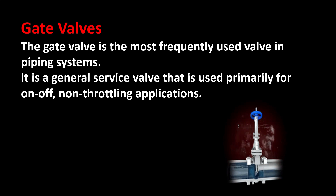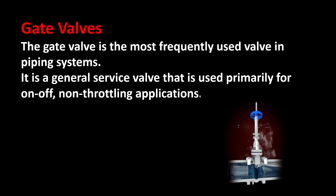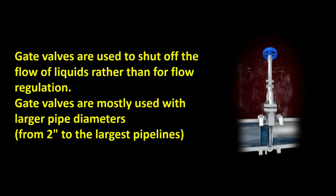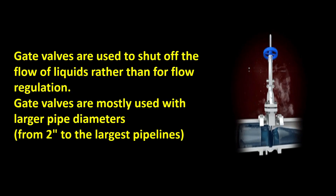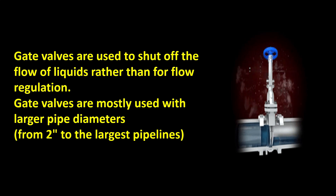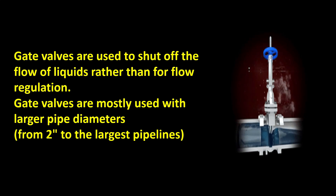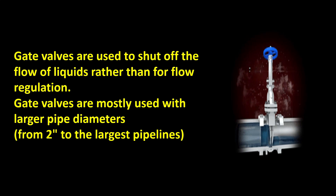The gate valve is the most frequently used valve in piping systems. It is a general service valve used primarily for on/off, non-throttling applications. Gate valves are used to shut off the flow of liquids rather than for flow regulation, and are mostly used with larger pipe diameters from 2 inch to the largest pipelines.